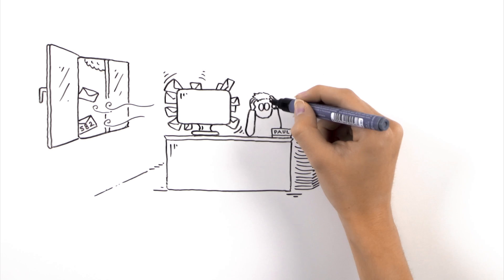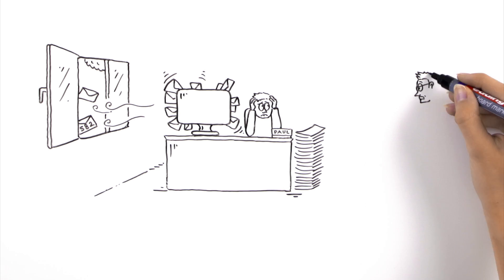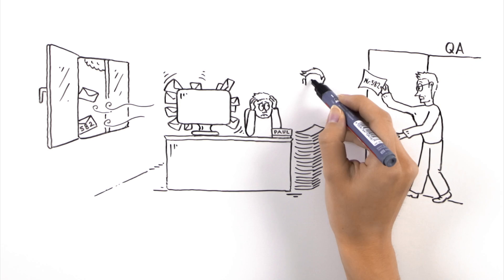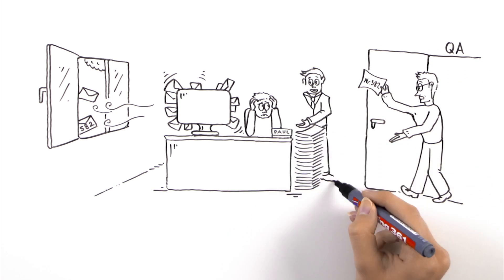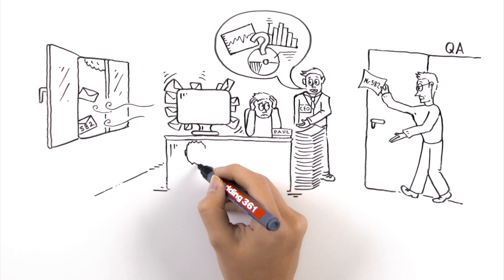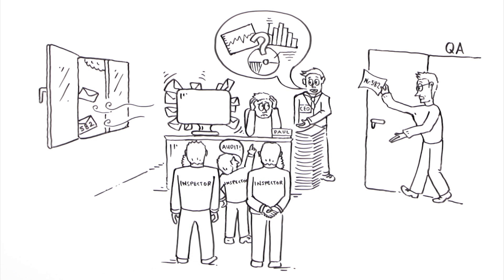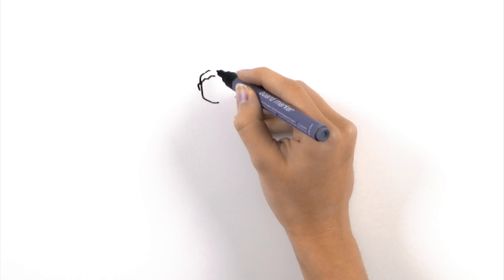Then, the quality assurance manager knocks on the door and asks for a comparison report and whether there were any temperature excursions for shipment number 582. At the same time, management is demanding statistics, reports, and assessments. On top of everything, a health authority inspector turns up and wants to conduct an audit. Paul is desperate.